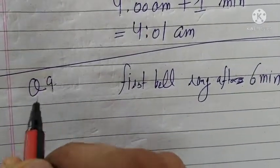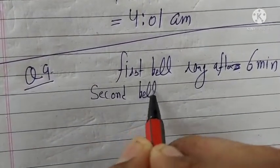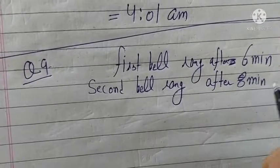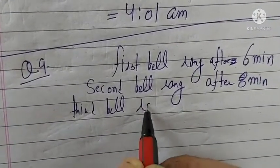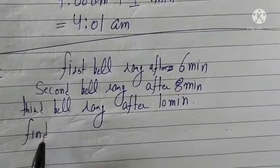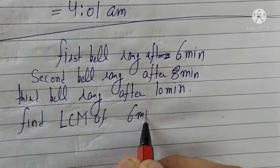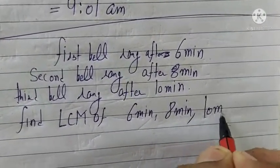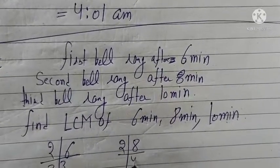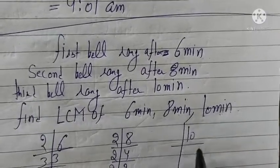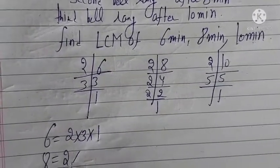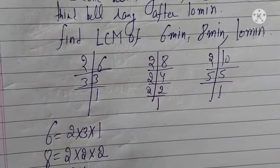The first bell rings after 6 minutes, the second bell after 8 minutes, and the third bell after 10 minutes. To find the LCM of 6, 8, and 10: the prime factors are — 6 = 2 × 3 × 1, 8 = 2 × 2 × 2, and 10 = 2 × 5.